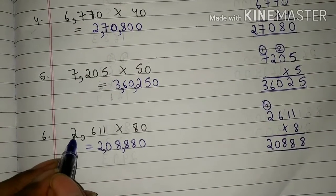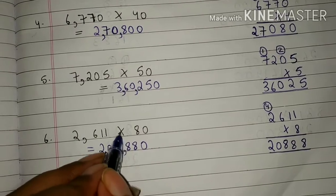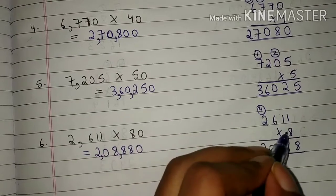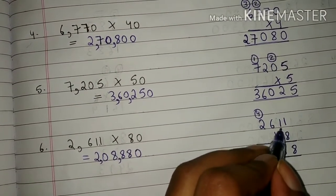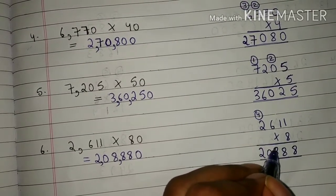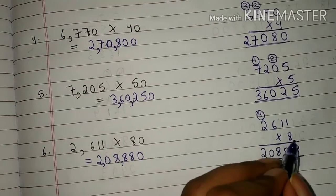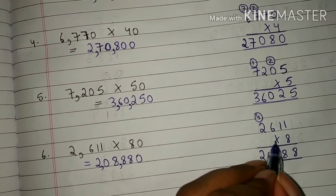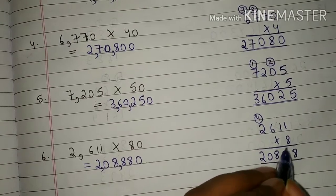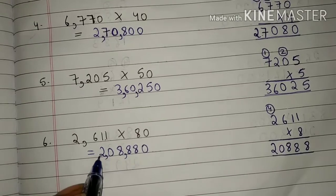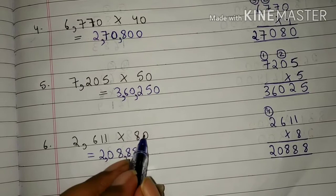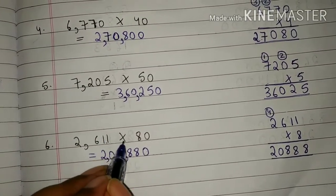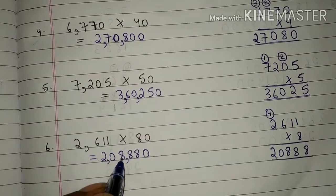6th question: 2,611 into 80. Students, first we will multiply 2,611 by 8. So 8 into 1 is 8. 8 into 1 is 8. 8 into 6 is 48. 8 we have written here and 4 will be carry. 8 into 2 is 16 plus 4 is 20. Students, 2,611 multiplied by 8 will give 20,888. So students, we will write 20,888 here. And here 0 is written, so we will write 0 here also. Now students, 2,611 multiplied by 80 will give 208,880.